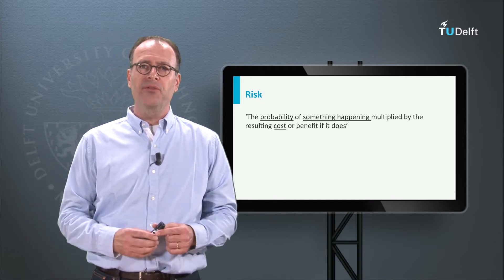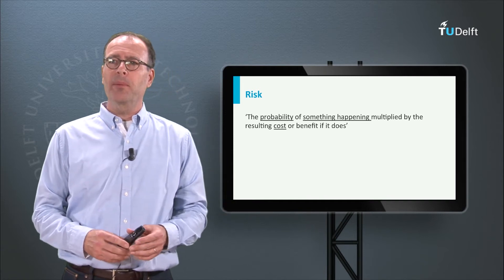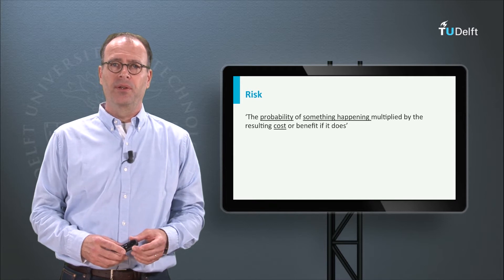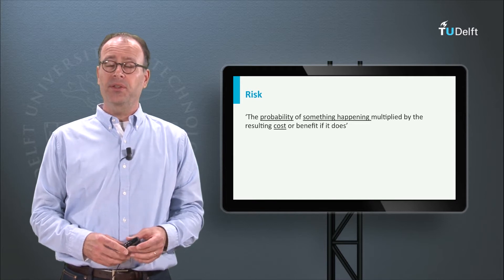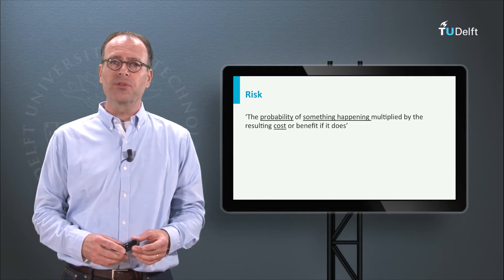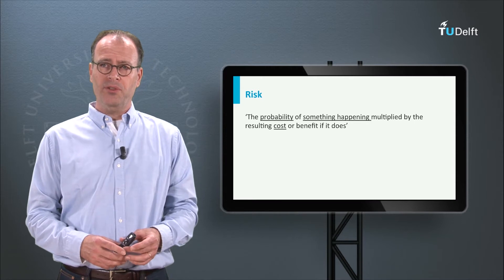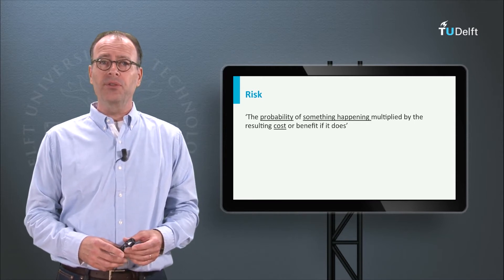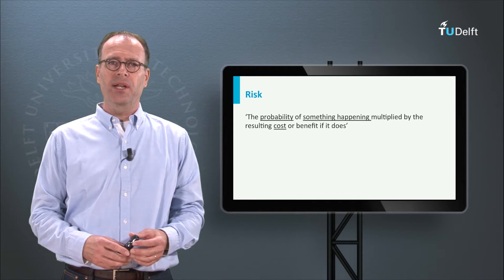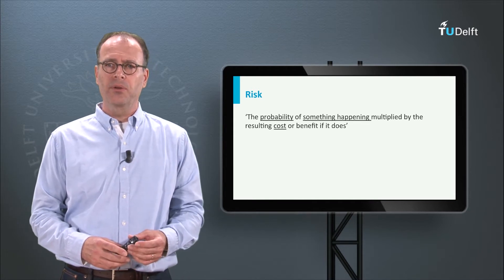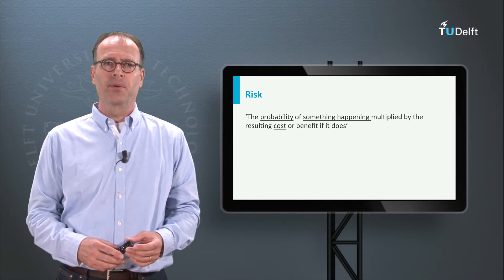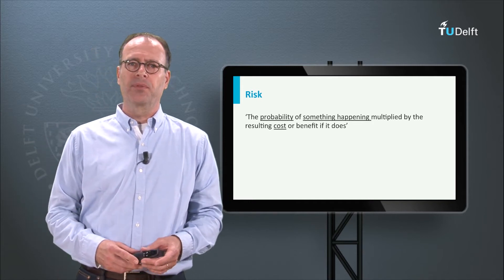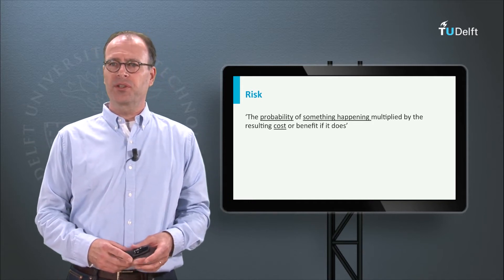Risk can be defined as the probability of something happening multiplied by the cost or benefit if it does. Note that this definition is neutral with regard to the outcome of something happening. Please also note that risk is often used in relation to negative outcomes — outcomes that we want to avoid. We can put this definition into a simple formula, the so-called risk triplet.